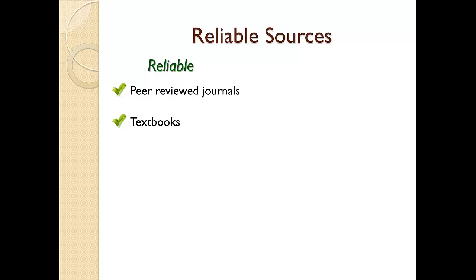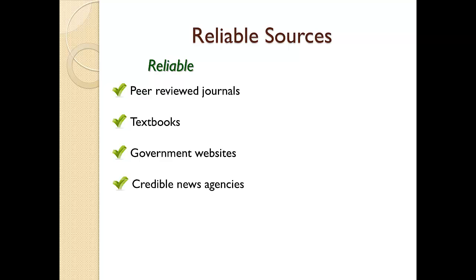Another example of a reliable source is a government website. The majority of information on these websites has been checked prior to publication. If the website address ends with .gov, then you know you are reviewing a government website. Educational websites that end in .edu are also typically very reliable sources of information. A final reliable source is a credible news agency. Some news agencies are biased towards liberal or conservative agendas and as a result may provide partisan information. My best advice is to use information from these sites with care and never rely solely upon them.